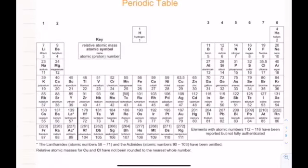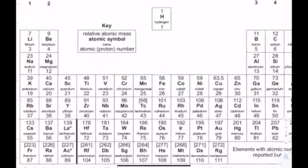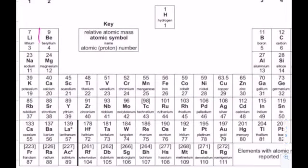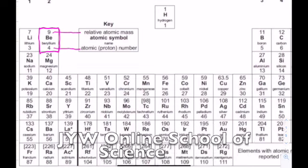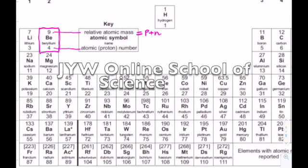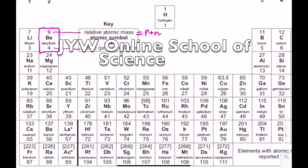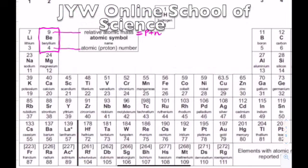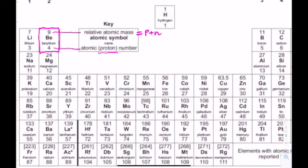In the periodic table, each element box has two numbers. The top number tells you the relative atomic mass — the number of protons and neutrons added together — and the bottom number tells you the atomic number, which is simply the proton number.